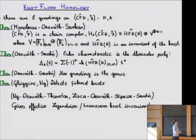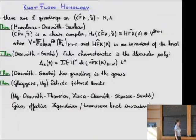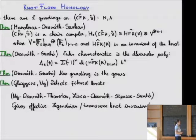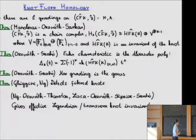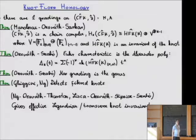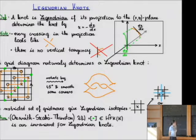The Alexander polynomial gave an upper bound on the genus of the knot; this categorification gives you the genus exactly, so you can compute the genus just by computing this knot Floer homology. You can also figure out whether or not the knot is fibered. What I'm going to talk about is that it gives you effective invariants for Legendrian and transverse knots — by effective I mean you can use it to distinguish Legendrian and transverse knots.